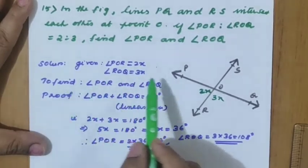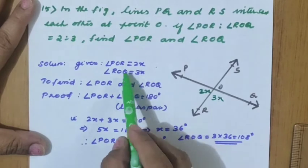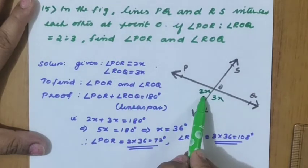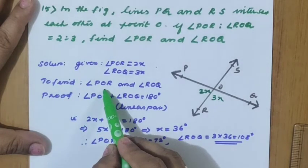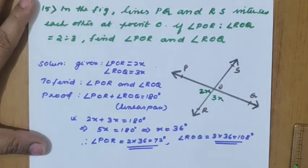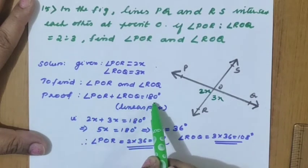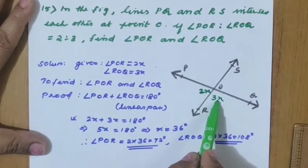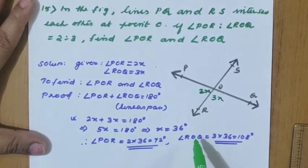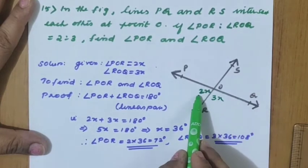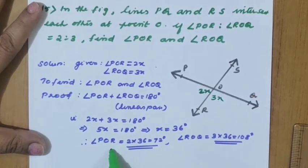Given angle POR equals 2x, ROQ equals 3x. To find: angle POR and ROQ. Proof: POR plus ROQ equals 180 degrees, so 2x plus 3x equals 180 degrees — that is the linear pair. Total: 5x equals 180 degrees, so x equals 36 degrees.